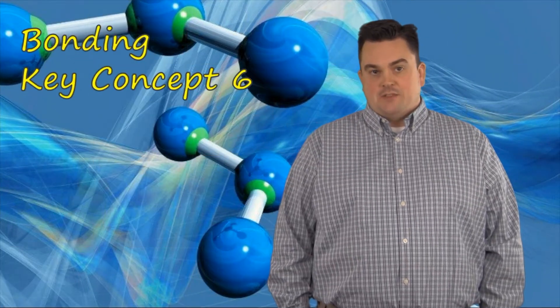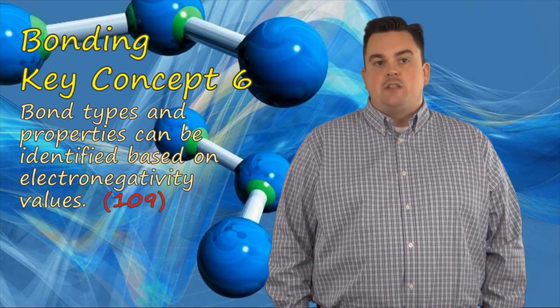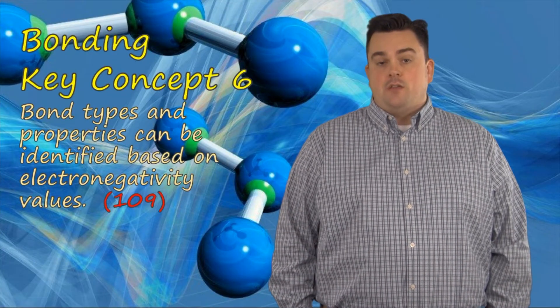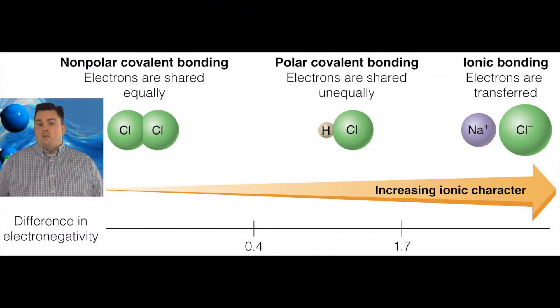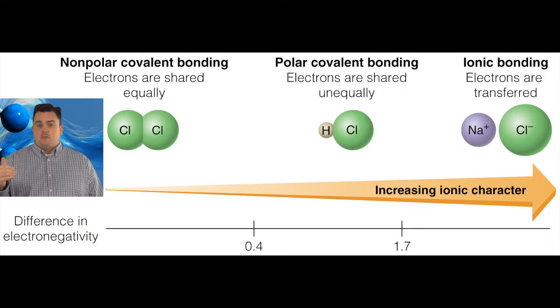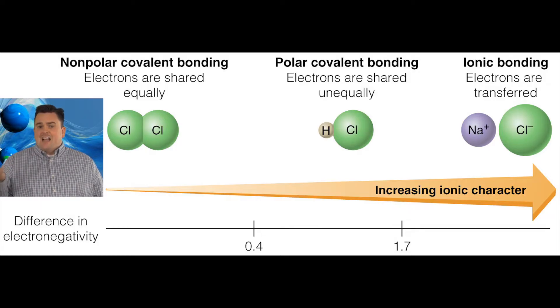Bonding key concept six. Bond types and properties can be identified based on electronegativity values. What we learned before in the periodic table videos is that metals tend to have very low electronegativity values, and non-metals tend to have very high electronegativity values. So when you have a metal with a non-metal, you have a very large difference in electronegativity, and that bond is said to be ionic. When you have two non-metals, which both have very high electronegativity values, the difference between them is very small. That type of bond is said to be covalent.